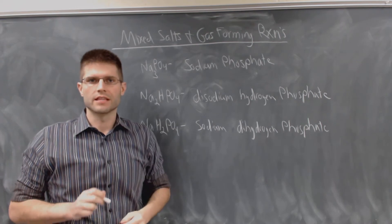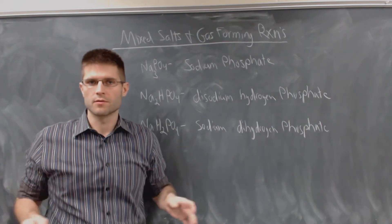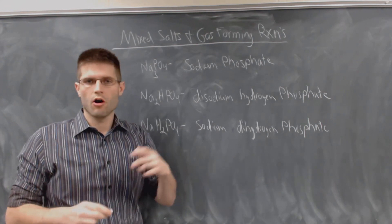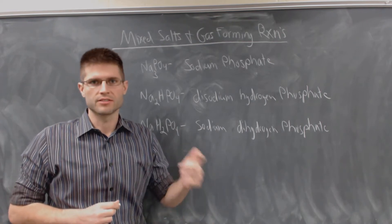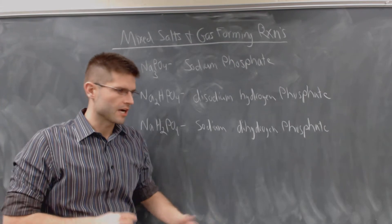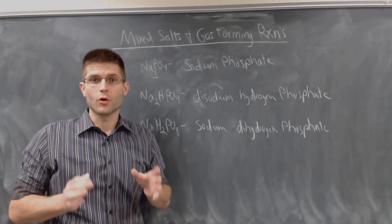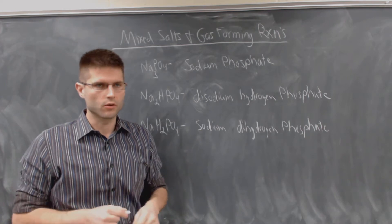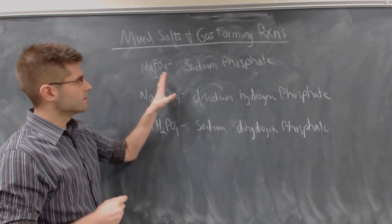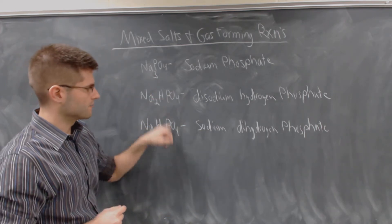So mixed salts are the last naming system that we're going to learn for the rest of the semester. We've gone through all those different naming systems: main group metals to non-metals, transition metals to non-metals, non-metals to non-metals, polyatomic ions, acid bases. You know a lot of naming. This is the last naming system that I want to cover for this course. So these are known as mixed salts. These bottom two are.